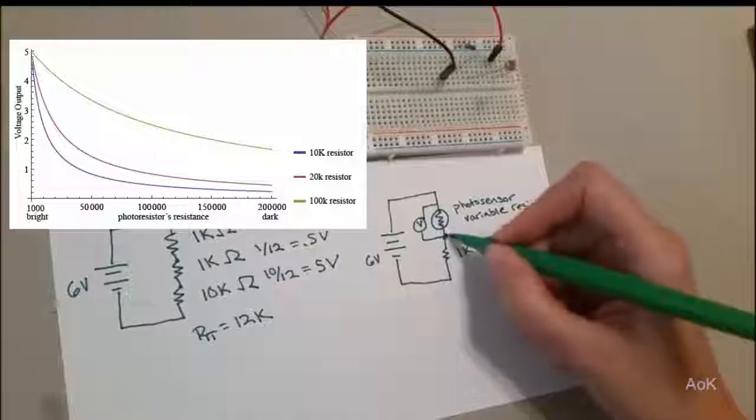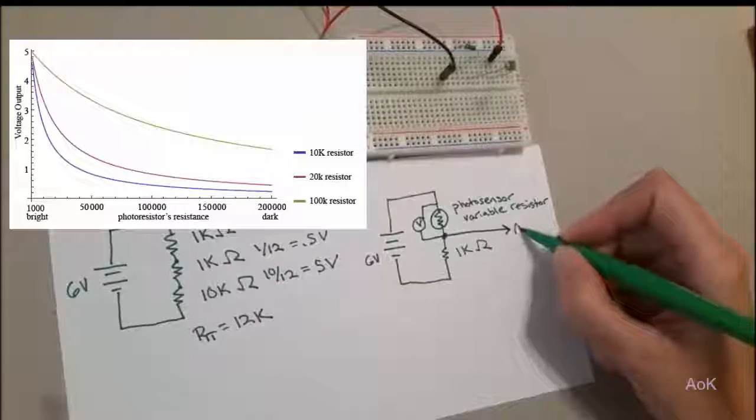We can read this value by adding a wire that goes to the Arduino analog.